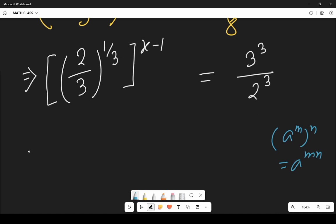So let's apply this here so it will be 2 by 3 whole to the power x minus 1 by 3 and from here we can write it as 3 by 2 whole cube.